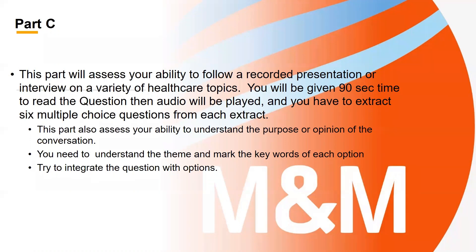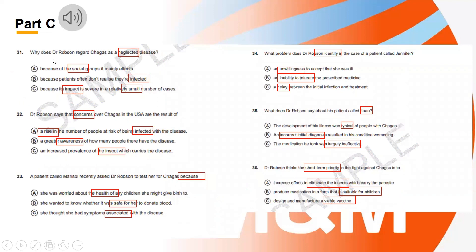The key point I want to make is that unlike other exam types where we focus on keywords, in part C the keywords can help you track your location in the conversation but will not help you select the right answer. Do not select your answer just because you're driven by keywords. Do not get influenced by keywords. They might use the same word in the conversation that appears in one of the options, but that does not mean it's the correct answer. There is also a possibility that they will paraphrase the word 'neglected' — they might not use it at all.